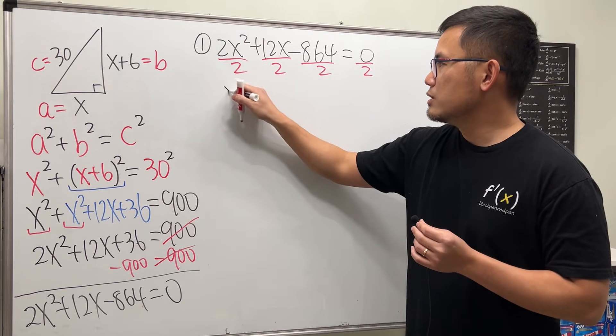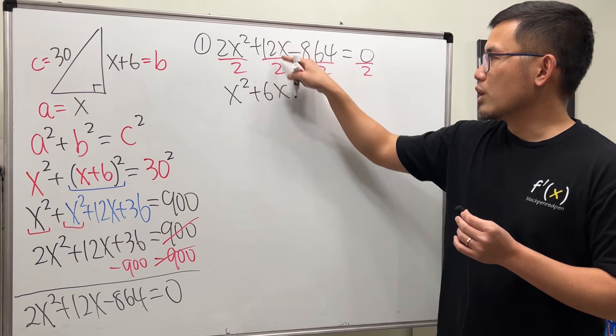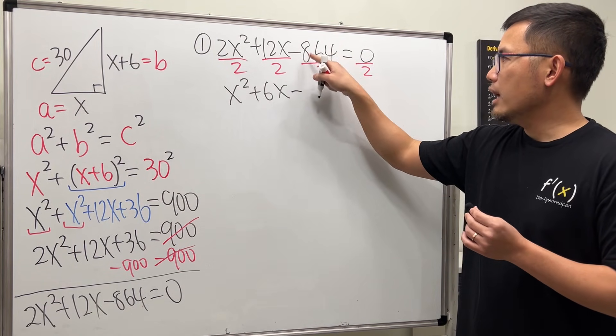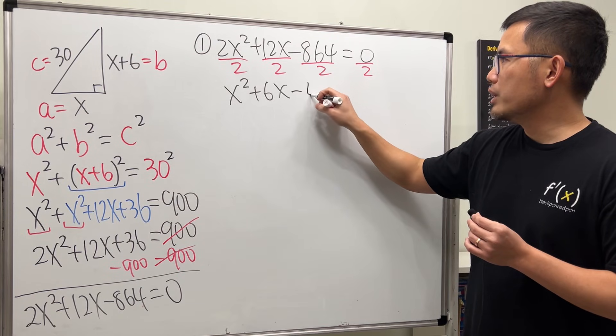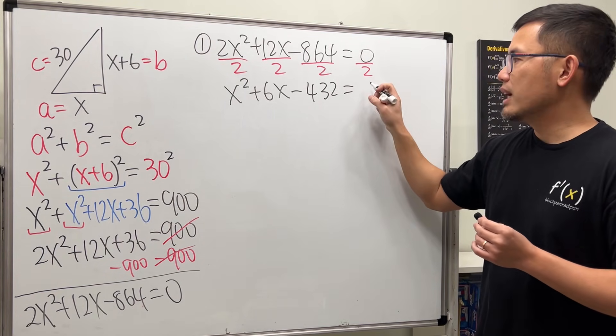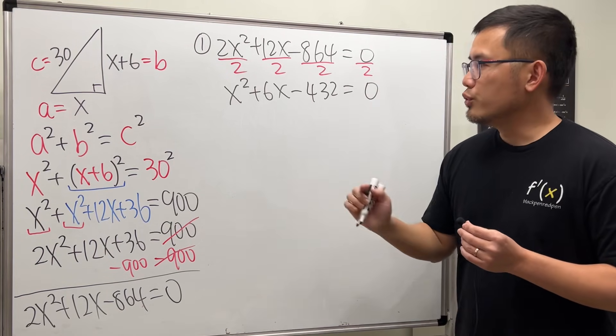So that you can see this right here is x², and then plus 12 over 2 is 6, and then the x. And then minus 864 divided by 2, we get 432. And then 0 divided by 2, we get 0. Now, for this right here, to factor it, I will show you the tic-tac-toe method. It's very easy to follow.